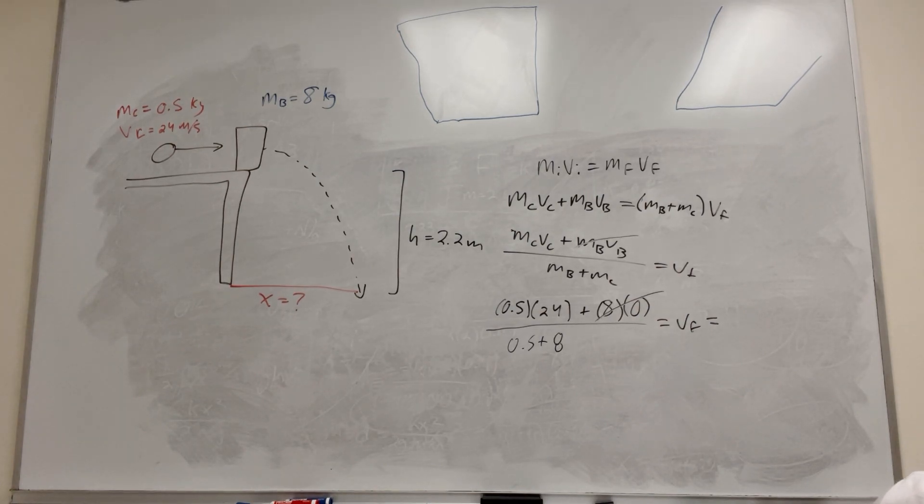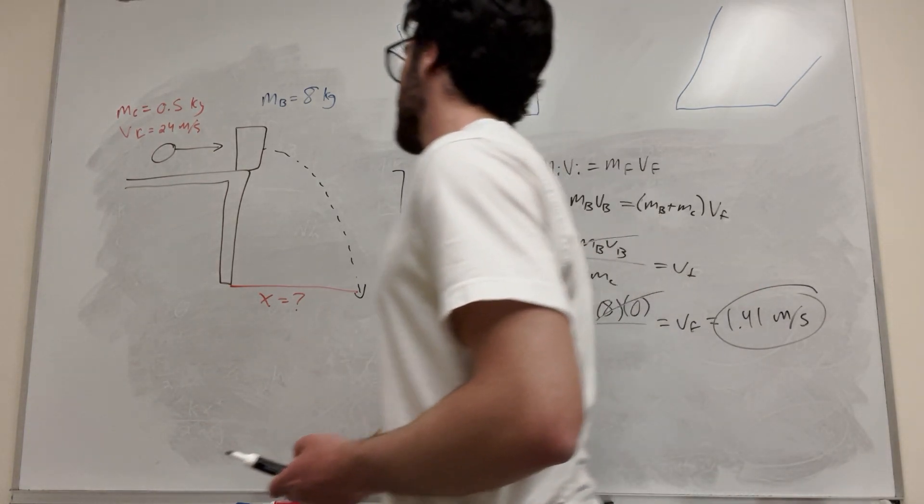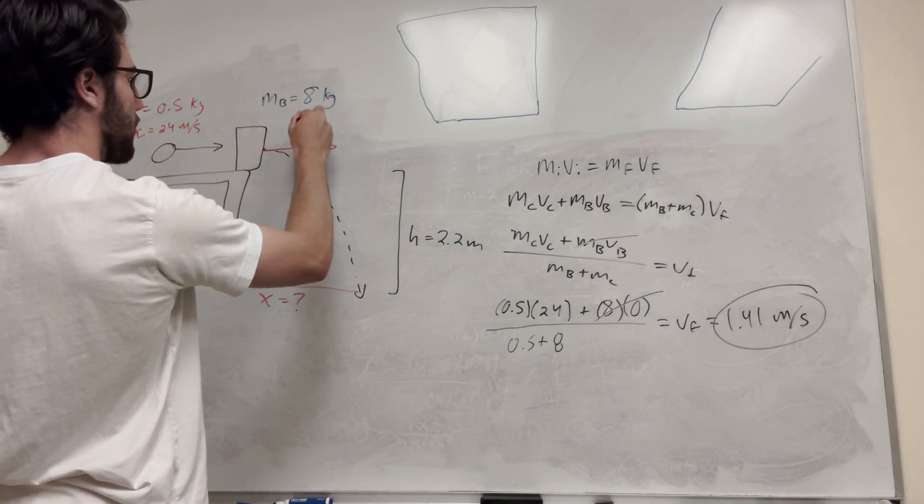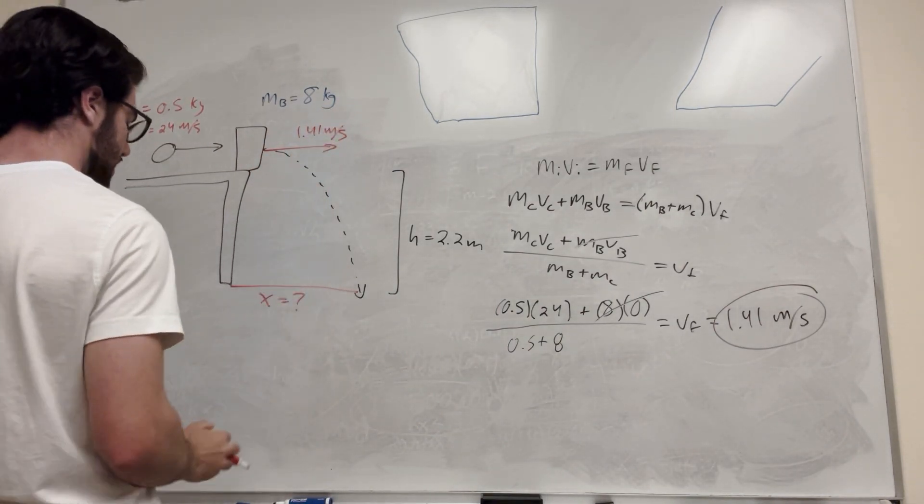So mass of the clay is 0.5 kilograms times 24 meters a second. And then mass of the block is 8 kilograms. But it's not moving, so it's actually a zero, which means that this gets cancelled out. So it's going to be 0.5 plus 8, that's equal to the velocity of the final. And if you plug this in, you get 1.41 meters a second. So that's its velocity tangential to the ground.